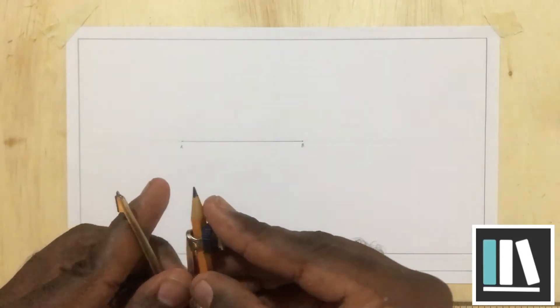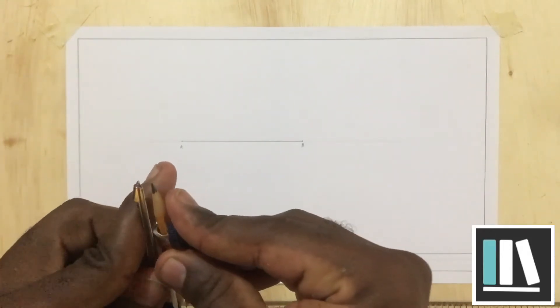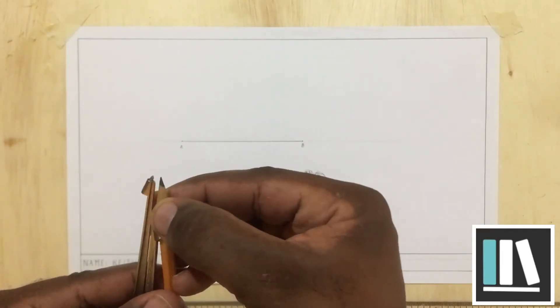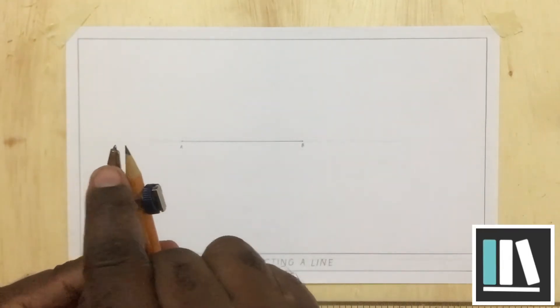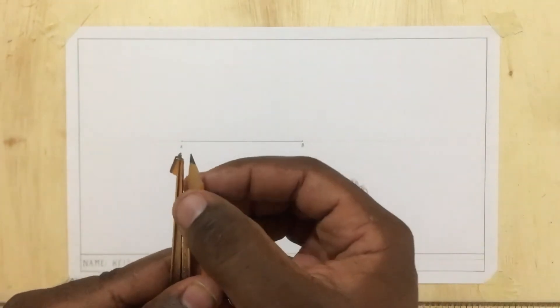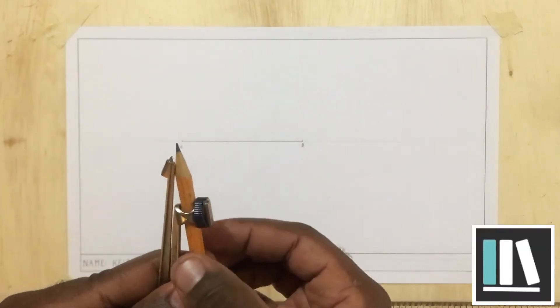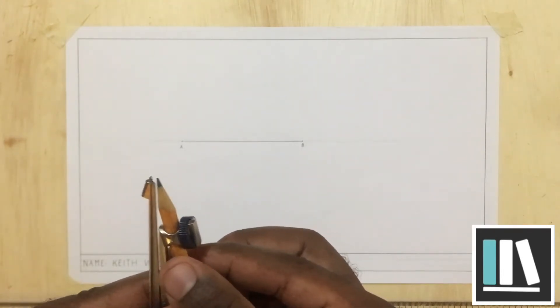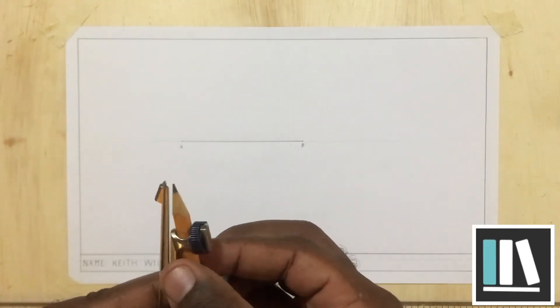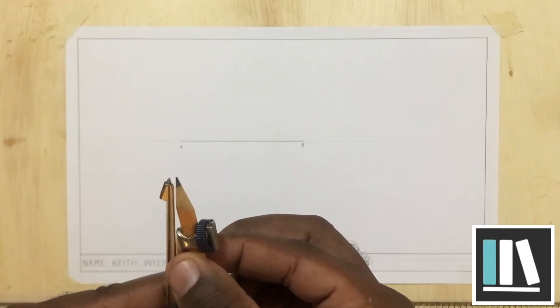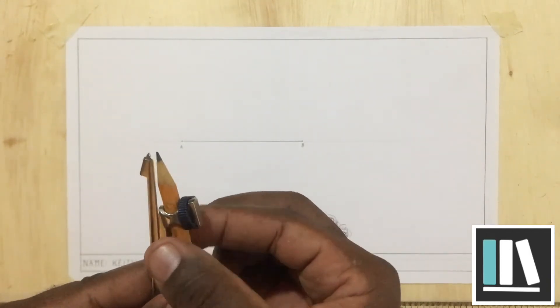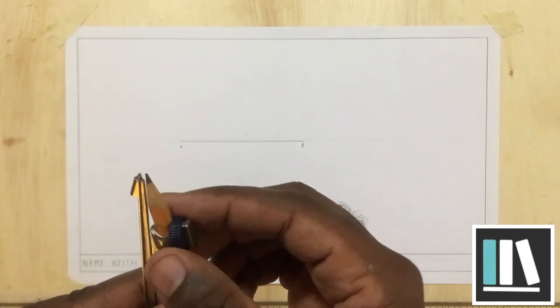Another thing that you have to ensure is as you are inserting the pencil, you have to ensure that the pencil point is in line with the compass point. It cannot be like this or like this. This will produce inaccuracies in your work. After you have ensured that the points are in line, you can go ahead and close your compass.